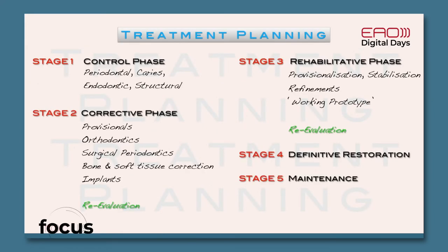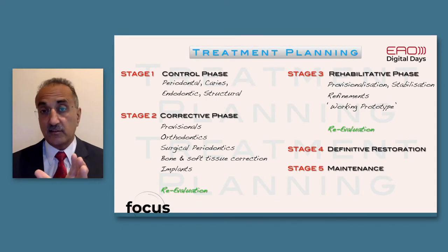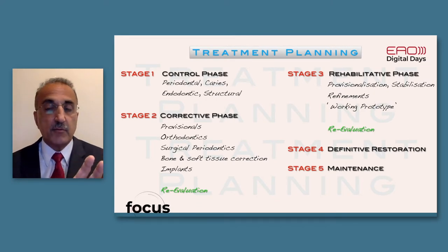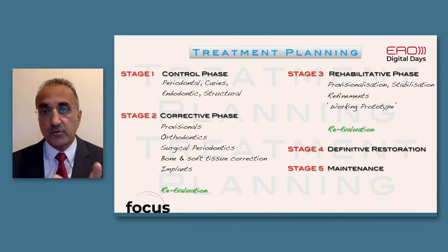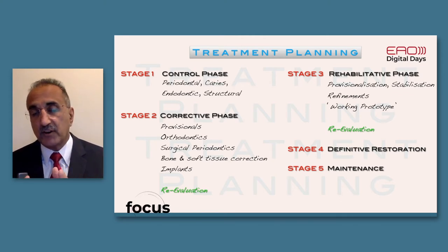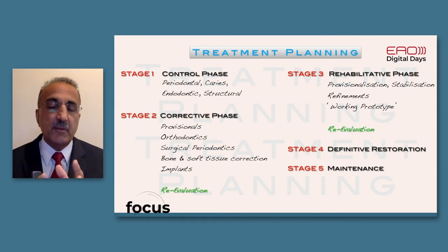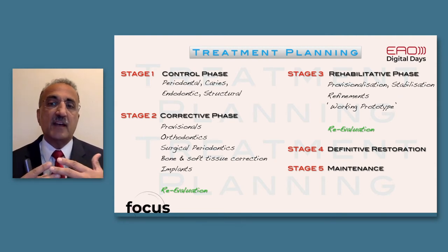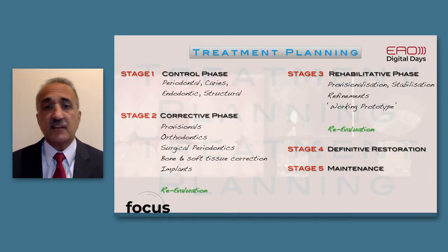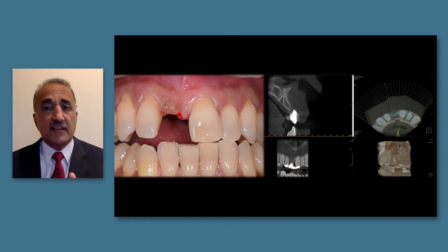Treatment planning requires a systematic approach: controlling disease, modifying the foundation into something healthy, rehabilitating the patient with a working prototype and provisional restoration, re-evaluating as we go, before making the final restoration, and then having a definite plan for supportive therapy and maintenance - particularly for cases involving a history of periodontitis.